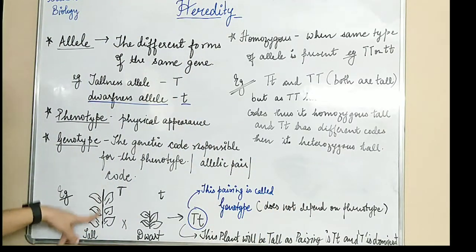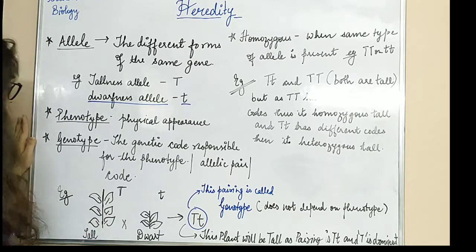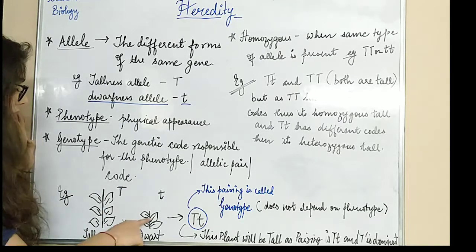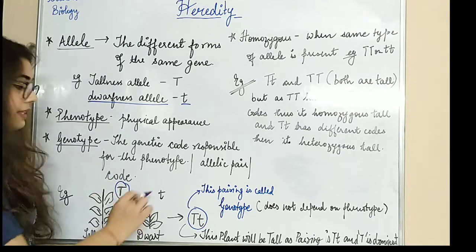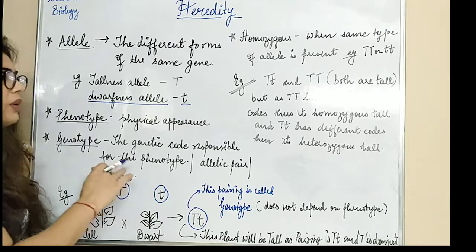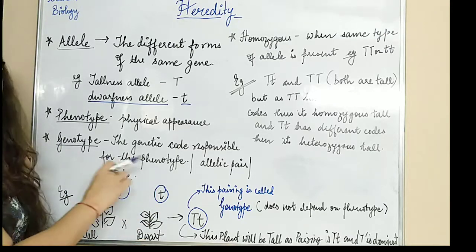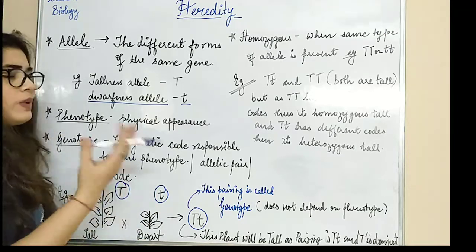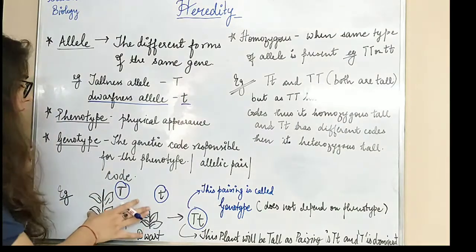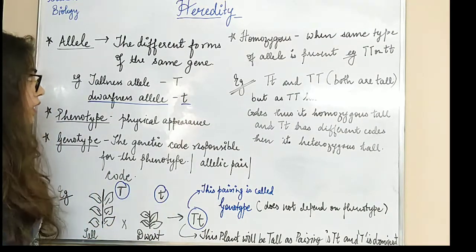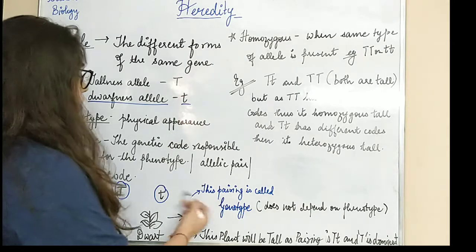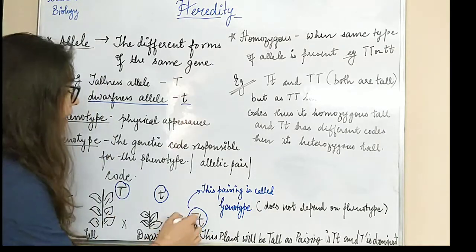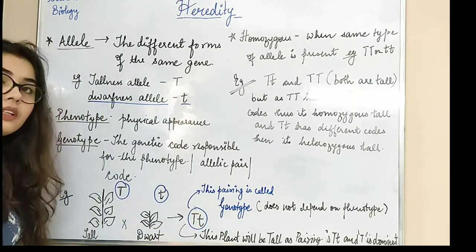This is the example I have here. One plant is tall, another plant is dwarf. The code for the tall plant is capital T, and for the dwarf plant is small t. This is just a representation we are using. When their crossing happens, the zygote that will form will be capital T, small t.